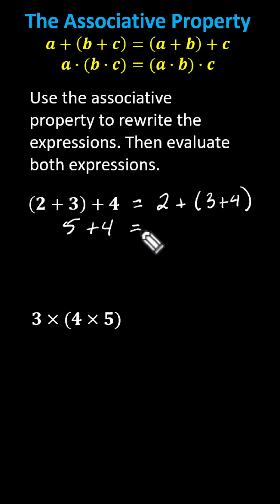On the right inside the parentheses we have 3 plus 4 which is 7. The right side simplifies to 2 plus 7. Going back to the left, 5 plus 4 is 9. And on the right, 2 plus 7 is also 9.